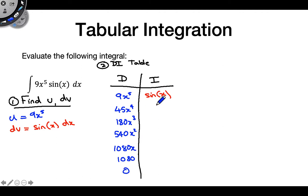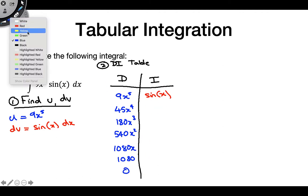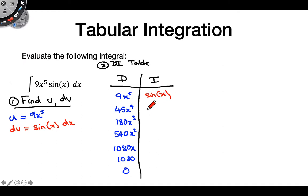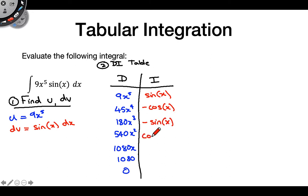Now we're going to take this many integrals over in the I column as well. The integral of sine of x is minus cosine of x. The integral of minus cosine of x is minus sine of x. The integral of minus sine of x is positive cosine of x. Then we have another positive sine of x, then the cycle repeats with minus cosine of x, and then minus sine of x.